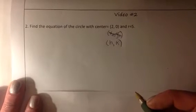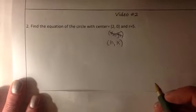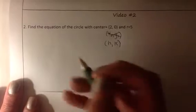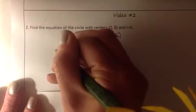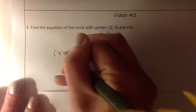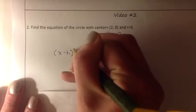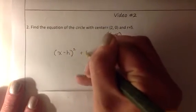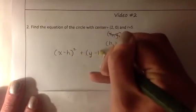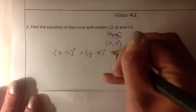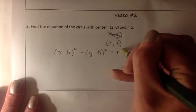We also know from task 2 that the equation of a circle can be written in the general form as (x - h)² + (y - k)² = r².